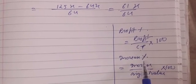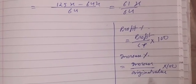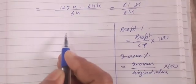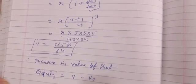So for loss percent we are writing loss upon CP times 100. For decrease percent we are writing decrease upon original value times 100. So same thing we are using here as formula. First of all, what will be entered here? Increase in value of that property we find that, and that is 61x/64.